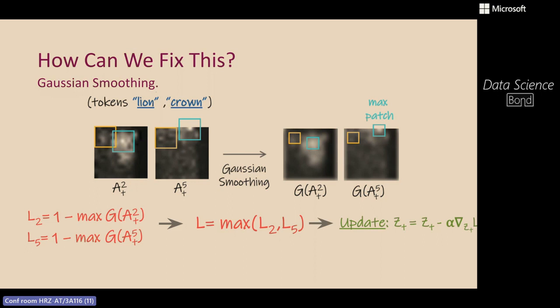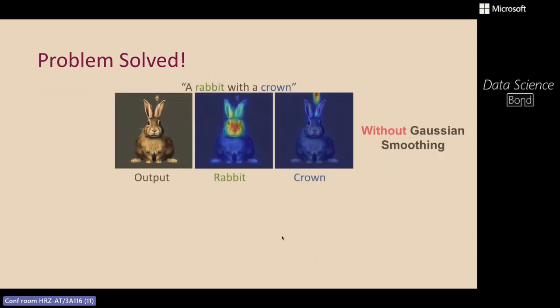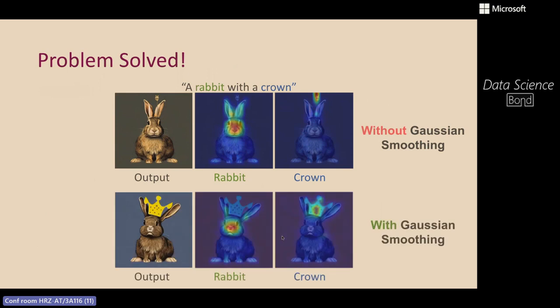The loss remains the maximum loss between all subjects, and we update the latent by a simple gradient descent step. The problem is now solved: you can see the same example without Gaussian smoothing versus with Gaussian smoothing — after applying smoothing, a single-patch solution is no longer enough.